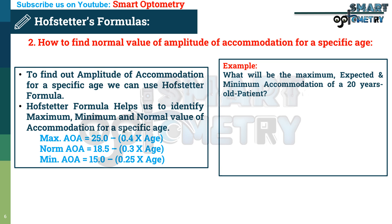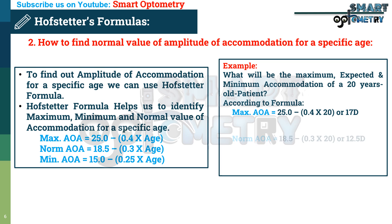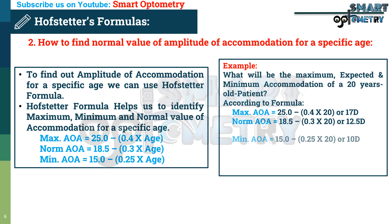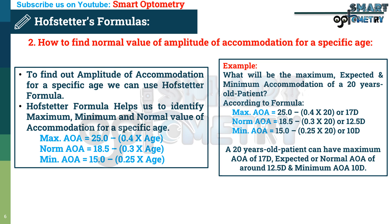For example, what will be the maximum, expected, and minimum amplitude of accommodation of a 20-year-old patient? According to Hofstetter's formula: maximum amplitude of accommodation equals 25 minus 0.4 multiplied by 20, giving 17 diopters. Expected normal amplitude of accommodation equals 18.5 minus 0.3 multiplied by 20, giving 12.5 diopters. Minimum amplitude of accommodation equals 15 minus 0.25 multiplied by 20, giving 10 diopters.